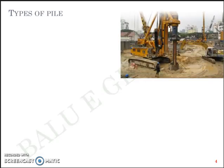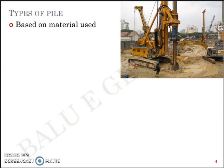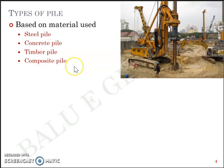Now, the types of pile foundations. You can divide the classification based on materials used, method of installation, etc. Based on materials used, the piles can be steel pile, concrete pile, timber pile, or composite pile. Steel pile means you have an I-section or a round steel pipe. Concrete pile is the one usually in practice. Even in concrete pile, they can be cast-in-situ piles or pre-cast piles. Concrete pile is a classification based on material.